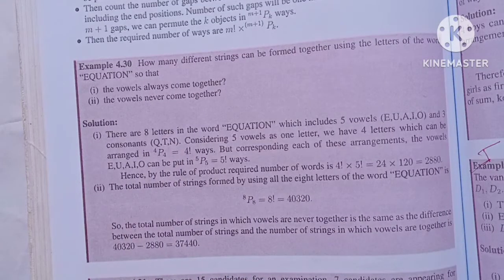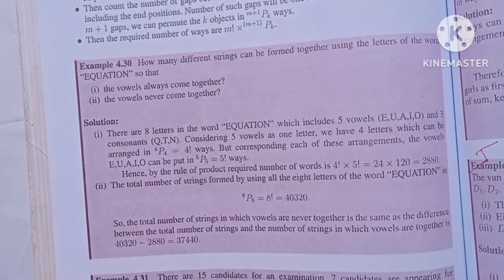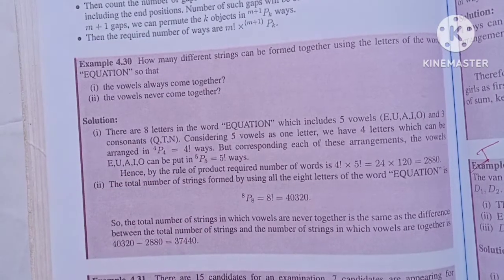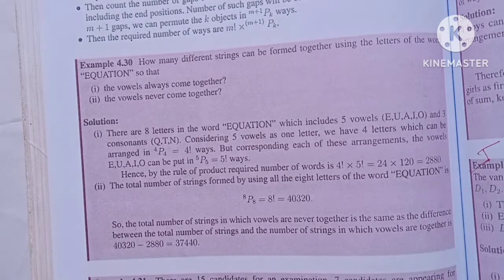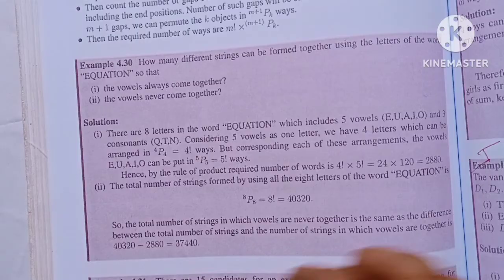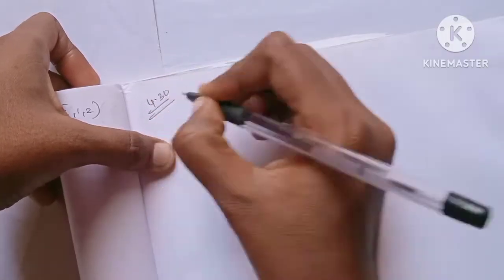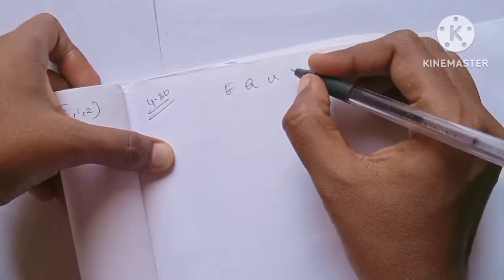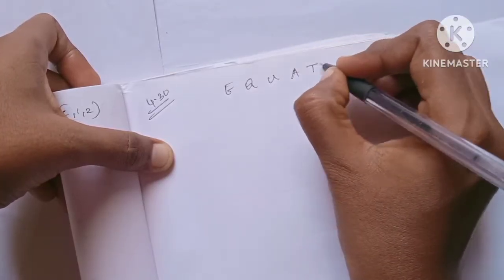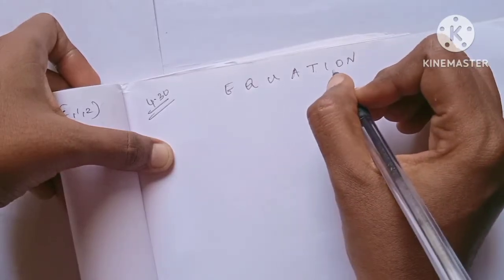Let's look at the letters of the word EQUATION: E, Q, U, A, T, I, O, N. Counting them: 1, 2, 3, 4, 5, 6, 7, 8. So there are 8 letters in total.